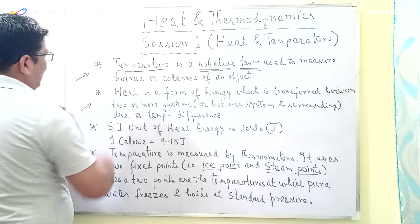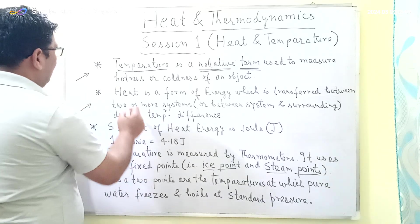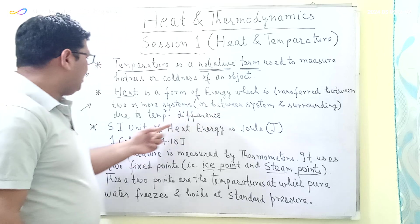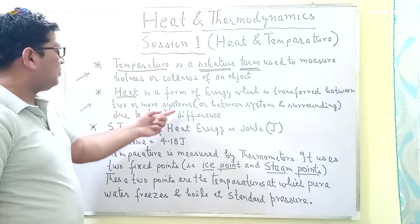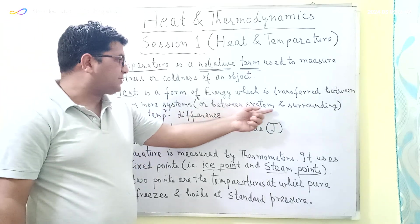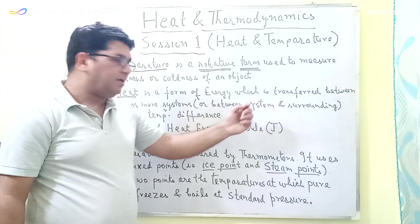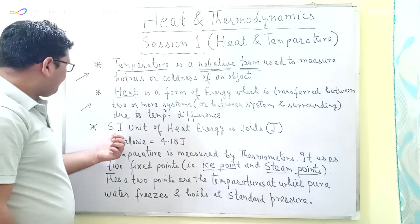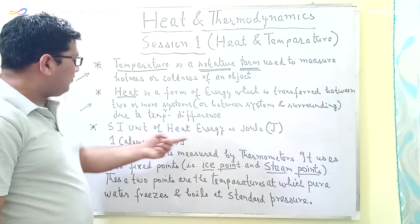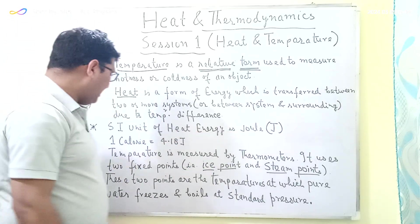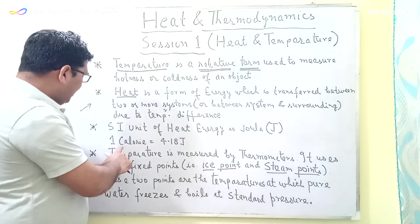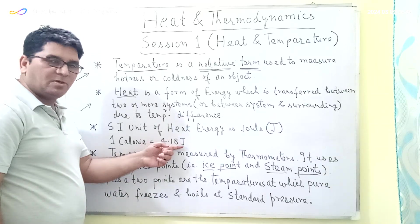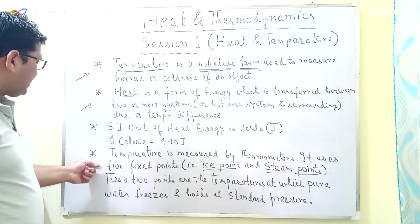The second point is heat. Heat is a form of energy which is transferred between two or more systems, or between a system and its surroundings, due to a temperature difference. The SI unit of heat energy is Joule, and there is one more unit called the calorie, where one calorie is equal to 4.18 Joules.